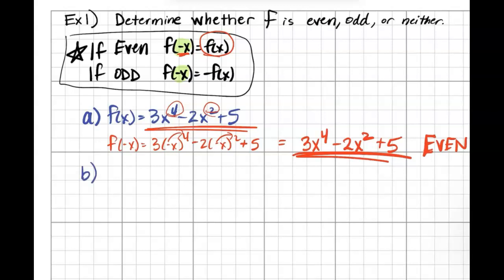Part B. Let's look at the function f(x) = 2x^5 - 7x^3 + 4x. The first thing I'm noticing is that all these exponents are odd, so I think it might be odd.